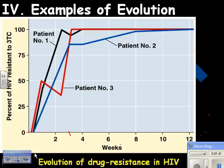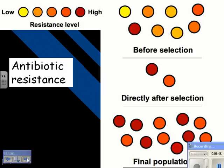If you didn't have evolution, it would be very difficult to explain what's happening here. Another good example is antibiotic resistance. An antibiotic is a drug you take to kill bacteria — not viruses. That's why the doctor will only give it to you if you have a bacterial infection.